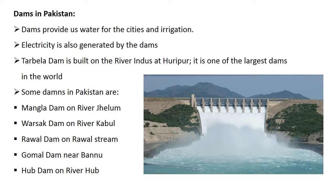There are many important dams in Pakistan. Dams provide water for cities and irrigation, and electricity is also generated by dams. The Tarbela Dam is built on the River Indus at Haripur and is one of the largest dams in the world. Other notable dams include Mangla Dam on the River Jhelum, Warsak Dam on the River Kabul, Rawal Dam on the Rawal stream, Gumal Dam near Bannu, Khanpur Dam near Rawalpindi, and Hub Dam on the River Hub in Balochistan.